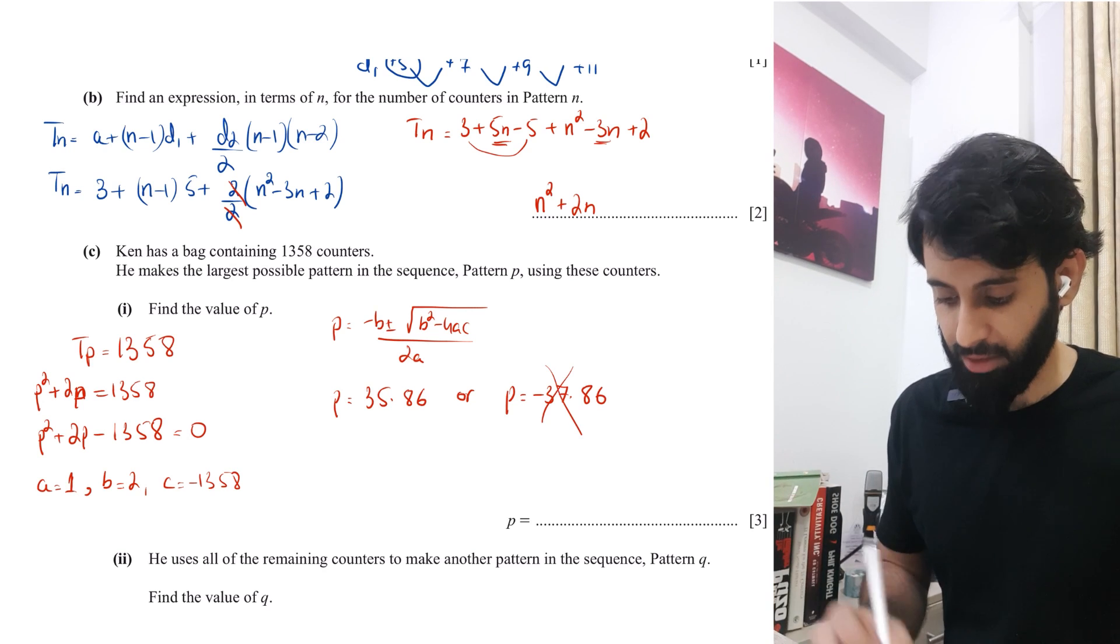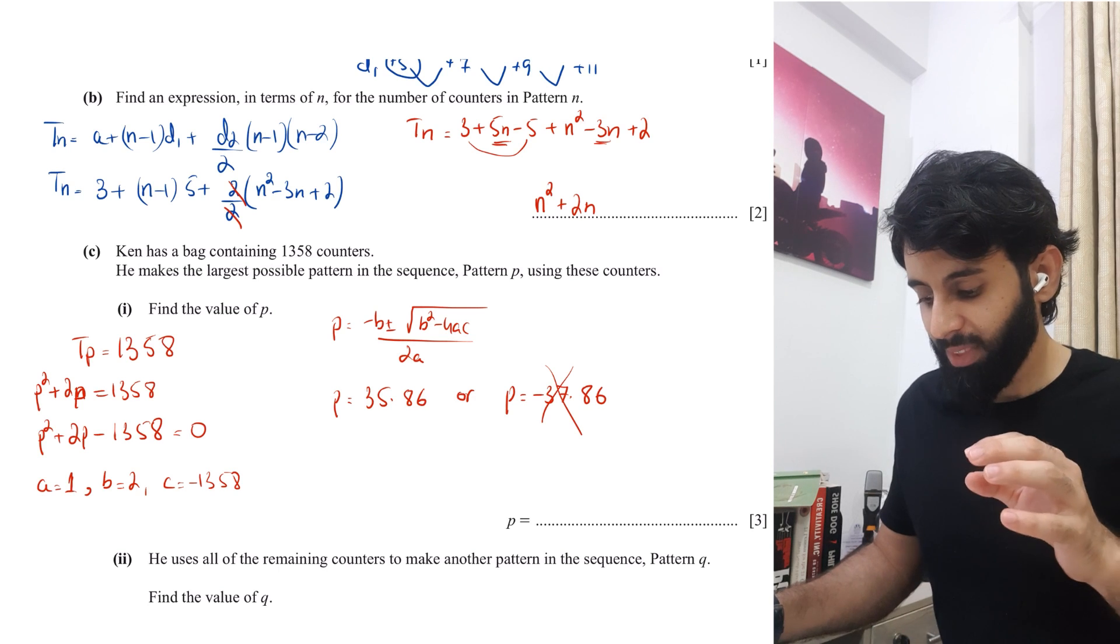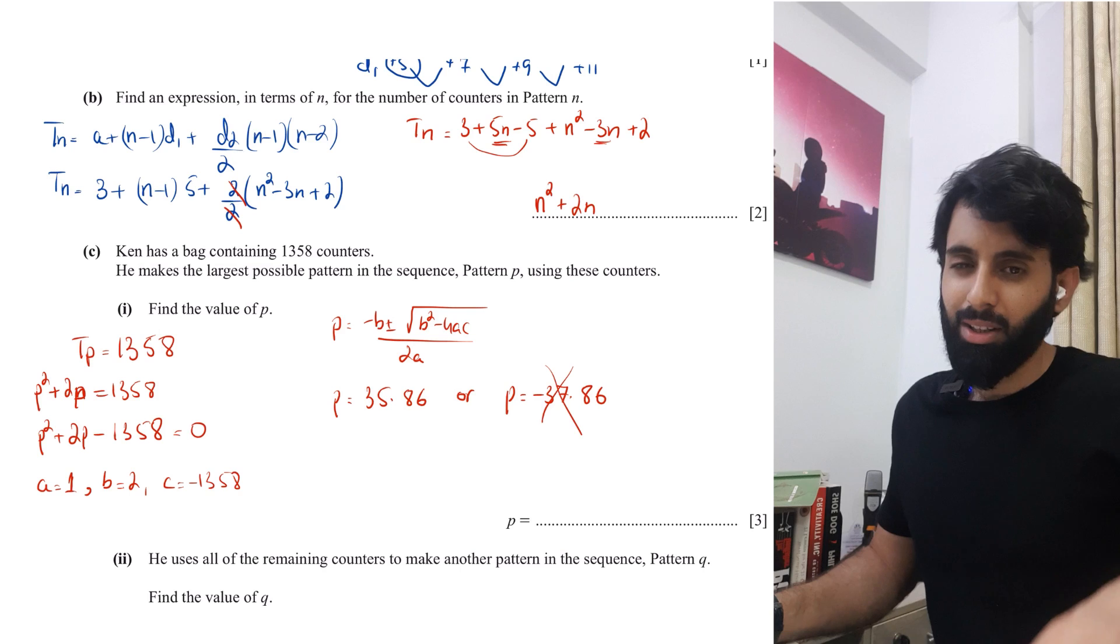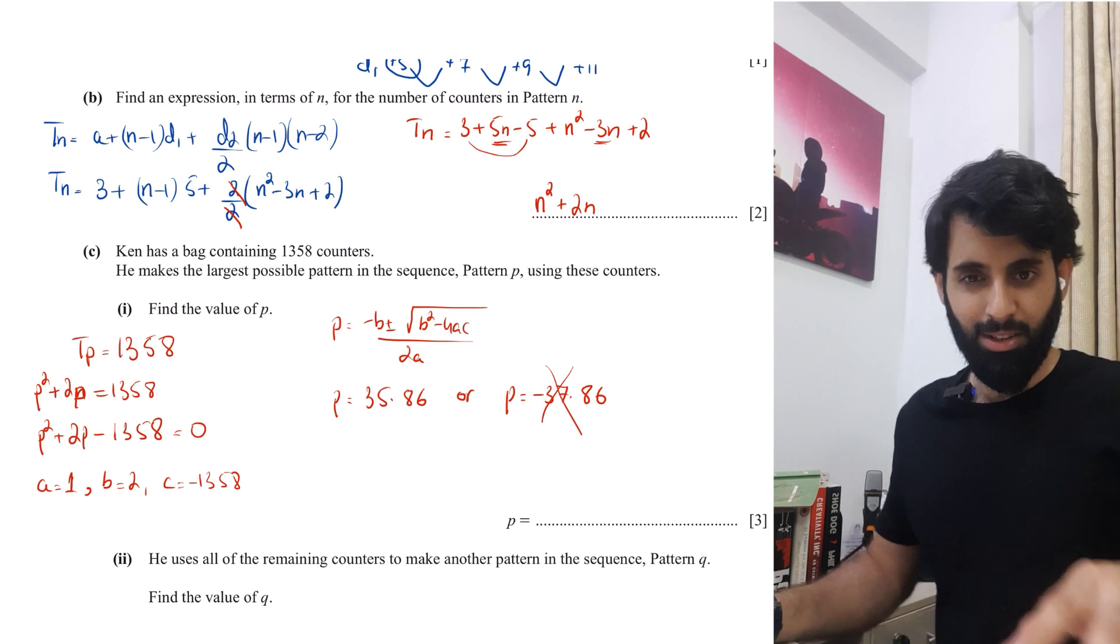Now this is the point at which we have to choose. Okay. Now we're going to reject the negative value. Okay. So that's a no brainer, but we have to decide whether it's going to be 35 or 36. Now what a lot of students at this point would do is they'd look at 35.86. They'd say, Oh, since this is closer to 36, that means the answer is going to be 36, but that's not the case because here we're not just using the concept of rounding it off.